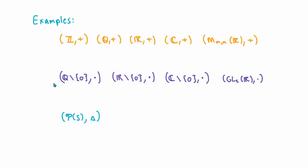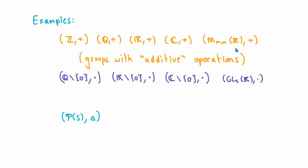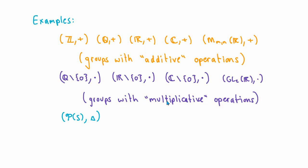In the previous video we also saw a number of examples of groups, and one thing to notice is that in some groups the binary operation is most naturally thought of as an additive operation, while in others it is more naturally thought of as a multiplicative operation. Sometimes we'll treat the binary operation as if it were some form of addition, and sometimes as if it were some form of multiplication, and that's going to be reflected in two different kinds of notations, which I'll talk about in a minute.